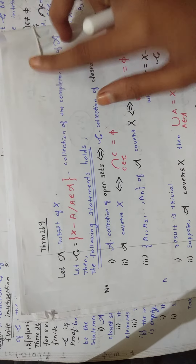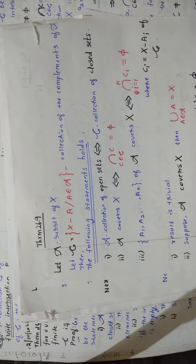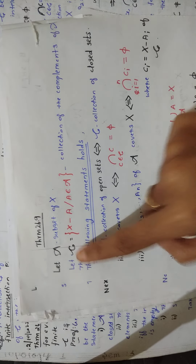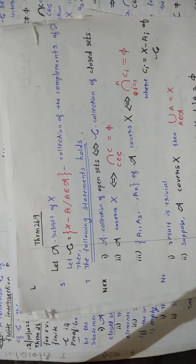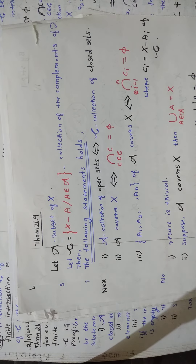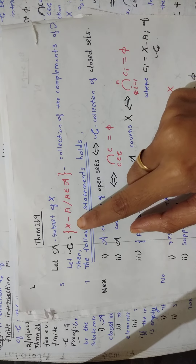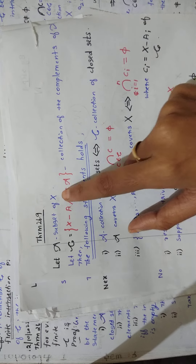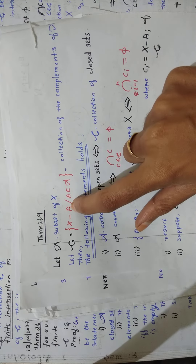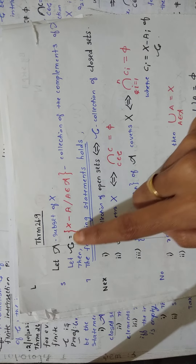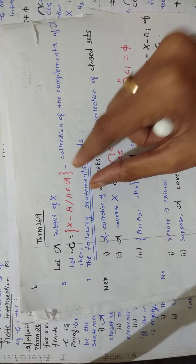So let script A be a subset of our topological space capital X. Then let script C be defined as the set of all X minus A such that A belongs to script A — that is, script C is the collection of complements of elements of script A.